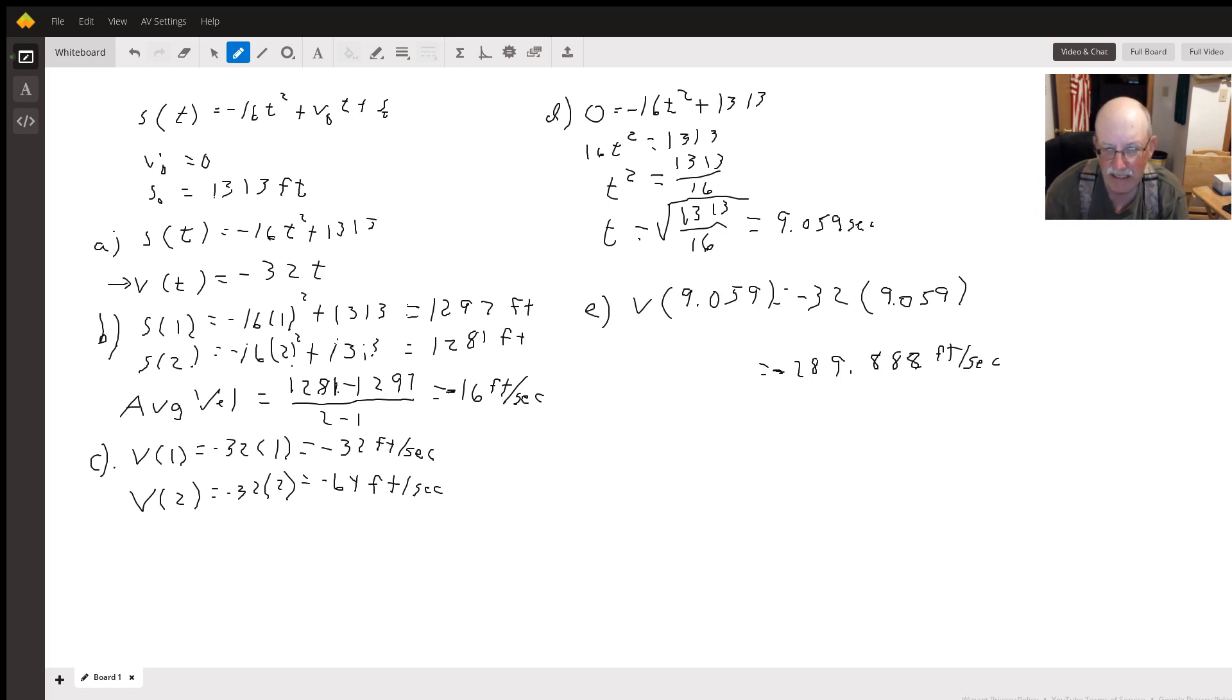To find the instantaneous velocity at that time, we take our 9.059 seconds and plug it into our velocity function. So we get -32 times 9.059, and that came out to be -289.888 feet per second.